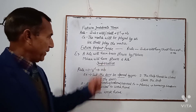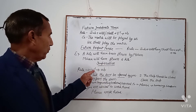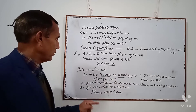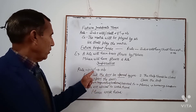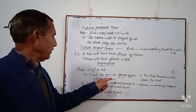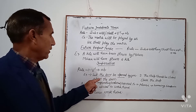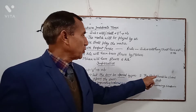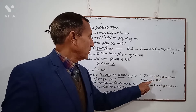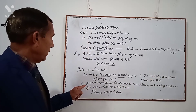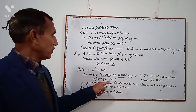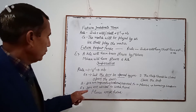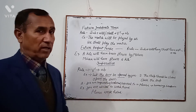Imperative Sentence. Rule: V1 + Object. Example: 'Let the door be opened by you.' Active: V1 'open' + object 'the door' = 'Open the door.' Or: 'The shop should be closed' becomes 'Close the shop.' Second rule: If the passive sentence has 'you are requested/ordered/advised to', change 'you are requested/ordered/advised to' into 'Please' plus the remaining sentence. Example: 'You are advised to work hard' becomes 'Please work hard.'